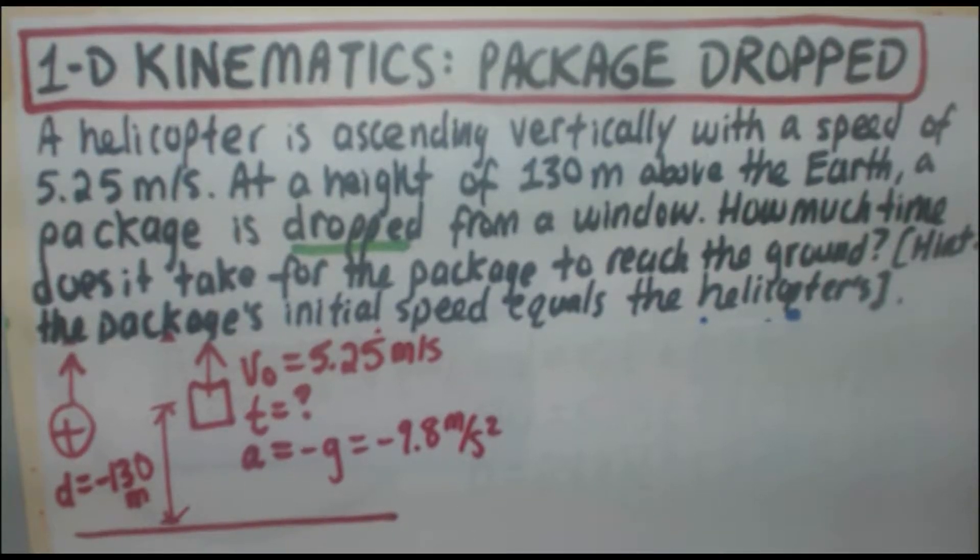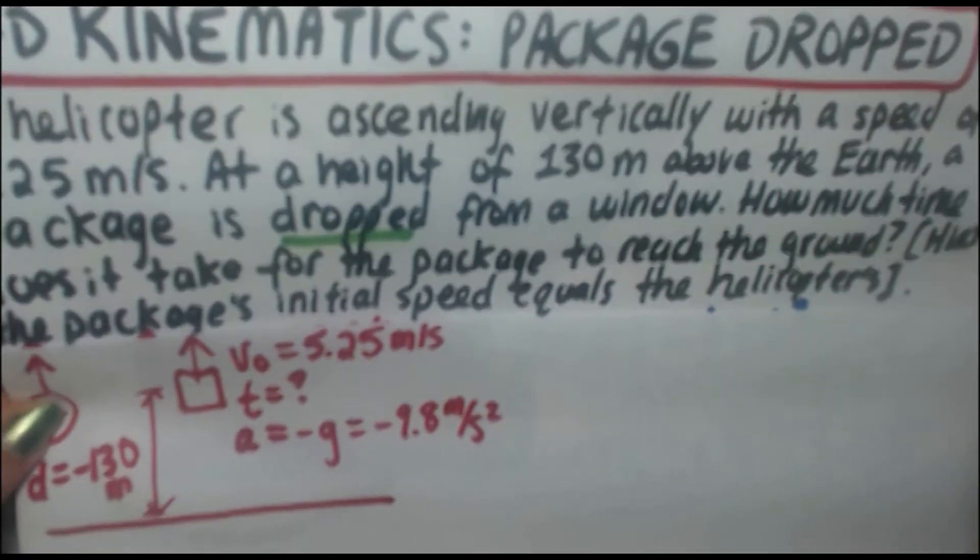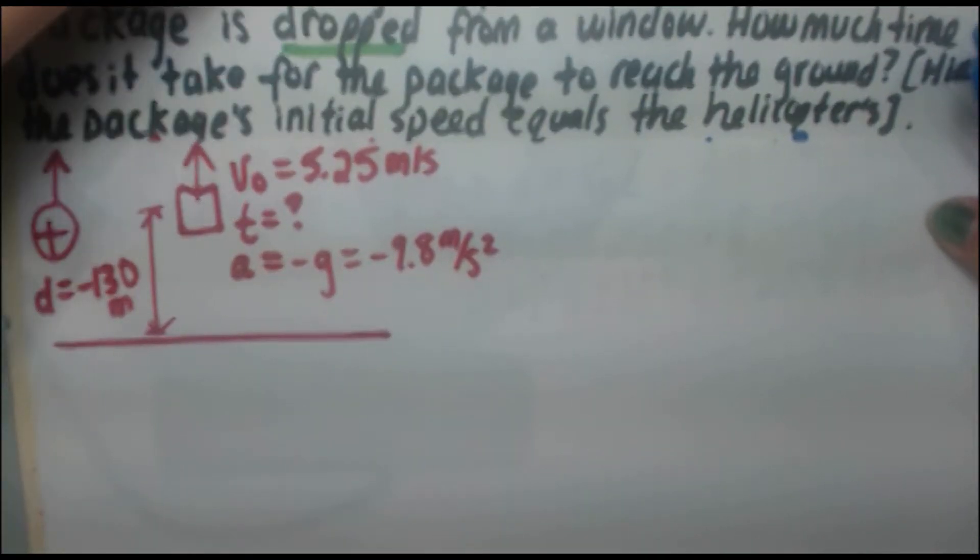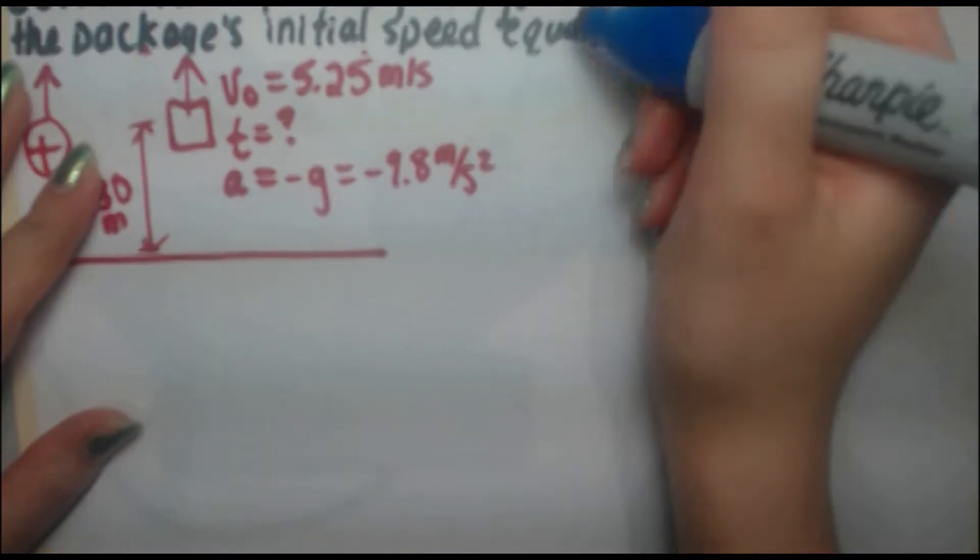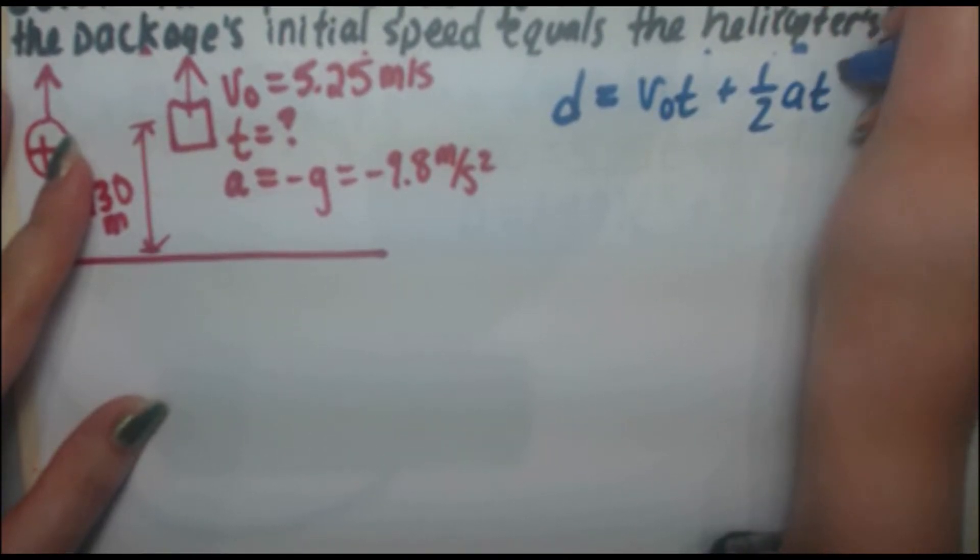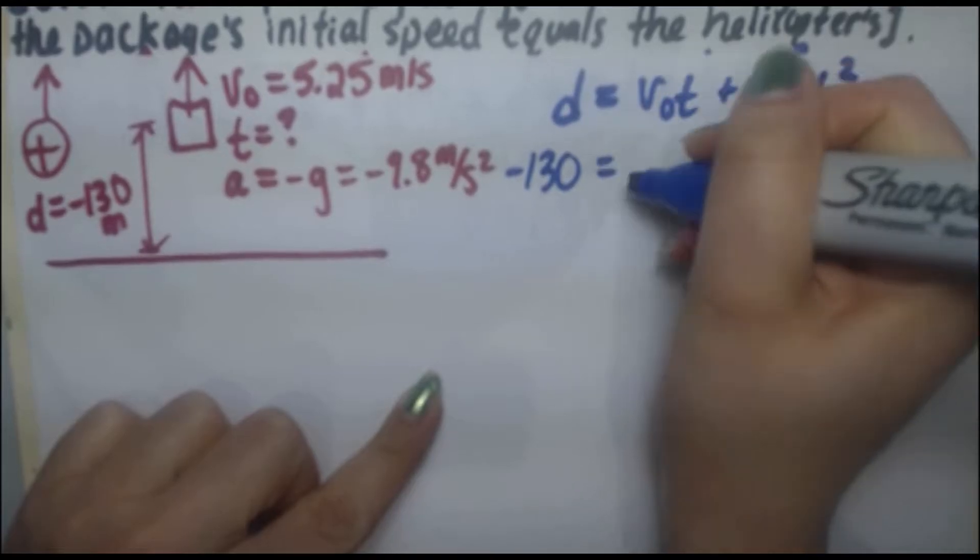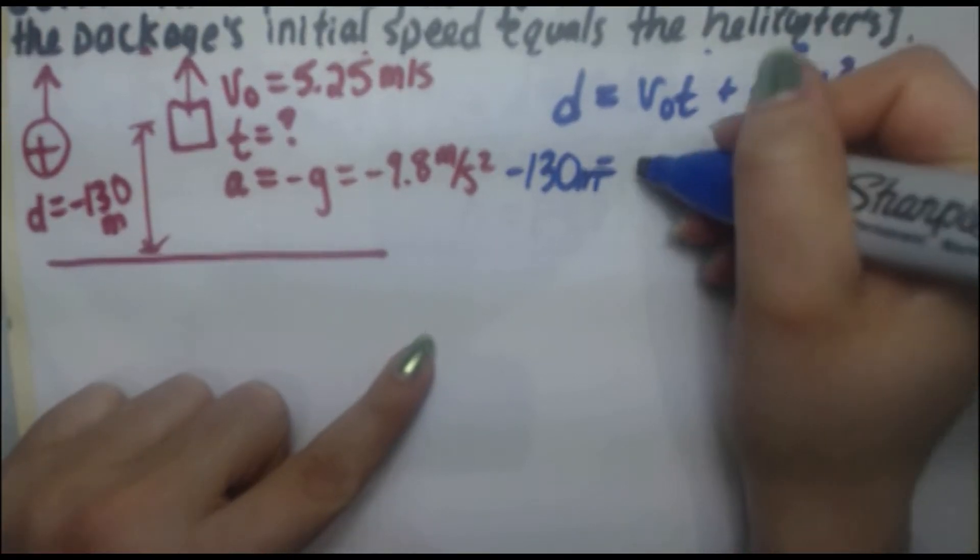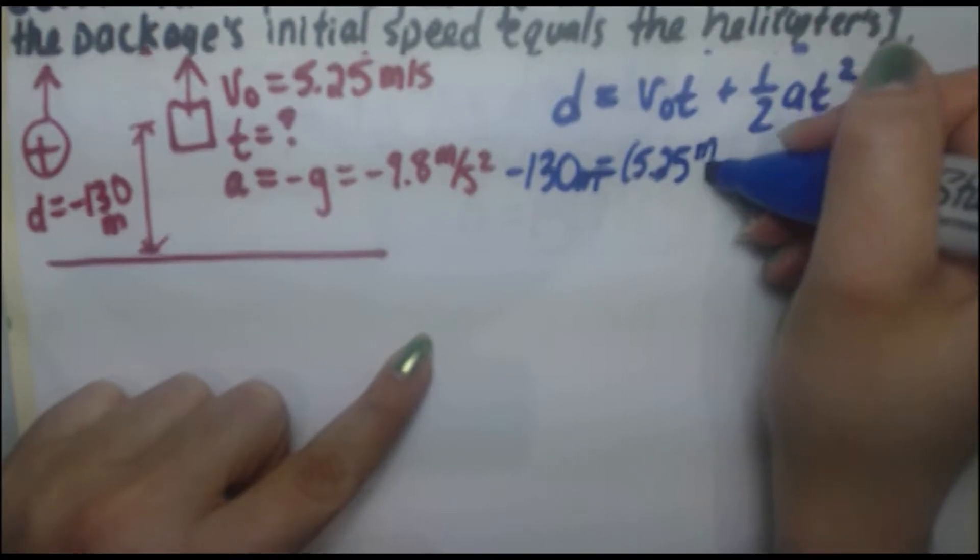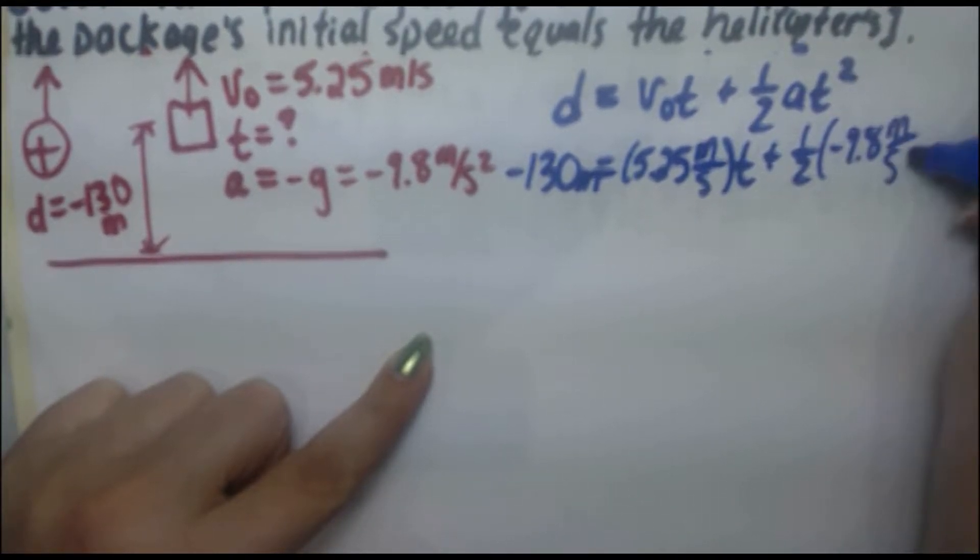So at this point, you've got all your variables down. You have to come up with a kinematic formula that involves t, a, d, and V naught. So I'm going to go ahead and use the following formula. Let me just scroll up a bit there. So d equals V naught t plus one half acceleration times t squared. All right. So let's go ahead and plug in our values. We've got minus 130 equals, and that's in meters. V naught is 5.25 meters per second times t plus one half times negative 9.8 meters per second squared times t squared.